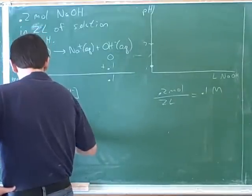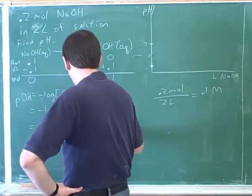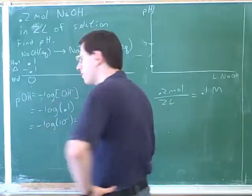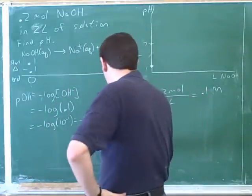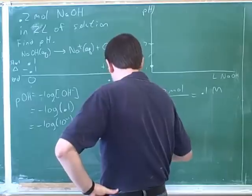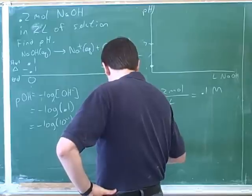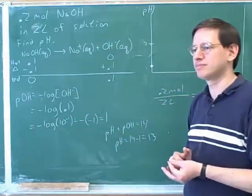So this is the negative log of 10 to the negative 1. So the log is negative 1. We know that the pH plus the pOH equals 14. So in this case, we would have the pH equals 14 minus 1, which is 13.